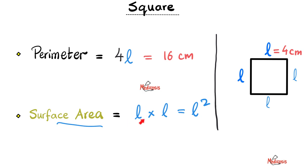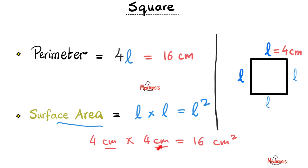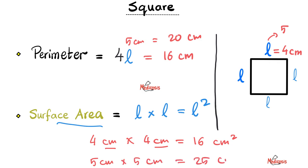How about the surface area? It is 4 centimeters times 4 centimeters — 4 times 4 is 16, centimeters times centimeters is centimeters squared, and this is where we get the word 'squared' from. Squared, because it's a surface area of a square. Now let's change L to 5: the perimeter is 4 times 5 centimeters equals 20 centimeters, and the surface area will be 5 centimeters times 5 centimeters equals 25 centimeters squared.